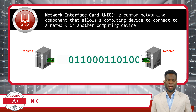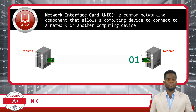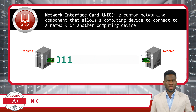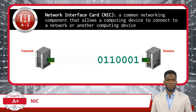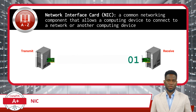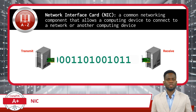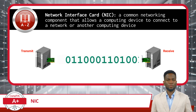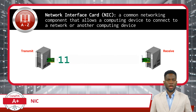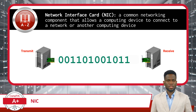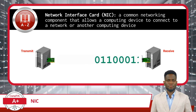The primary function of a NIC is to convert the digital data generated by a computing device into an electrical or optical signal that can be transmitted as an output. They also need to be able to receive data by converting electrical and optical signals back into digital data as an input.